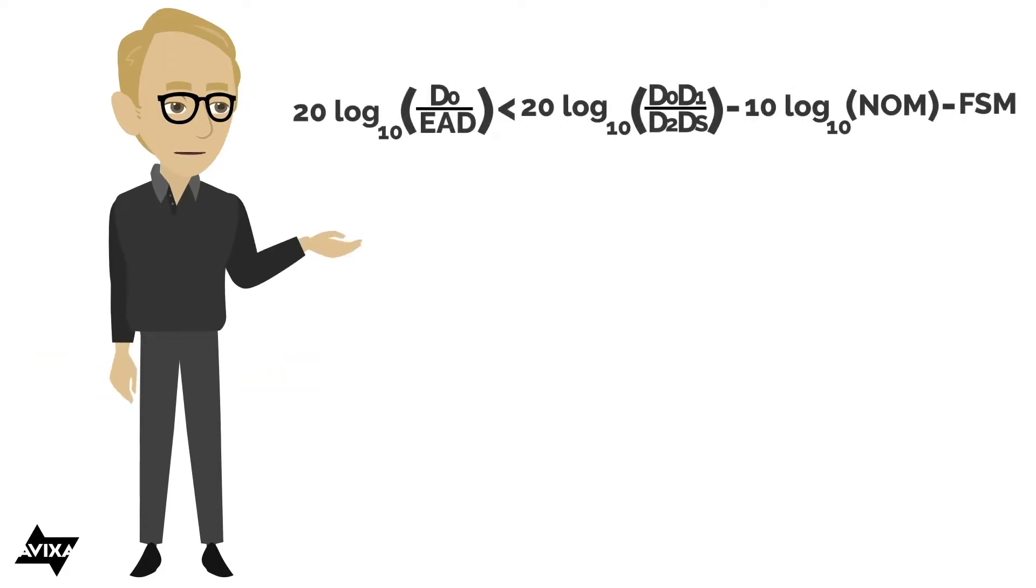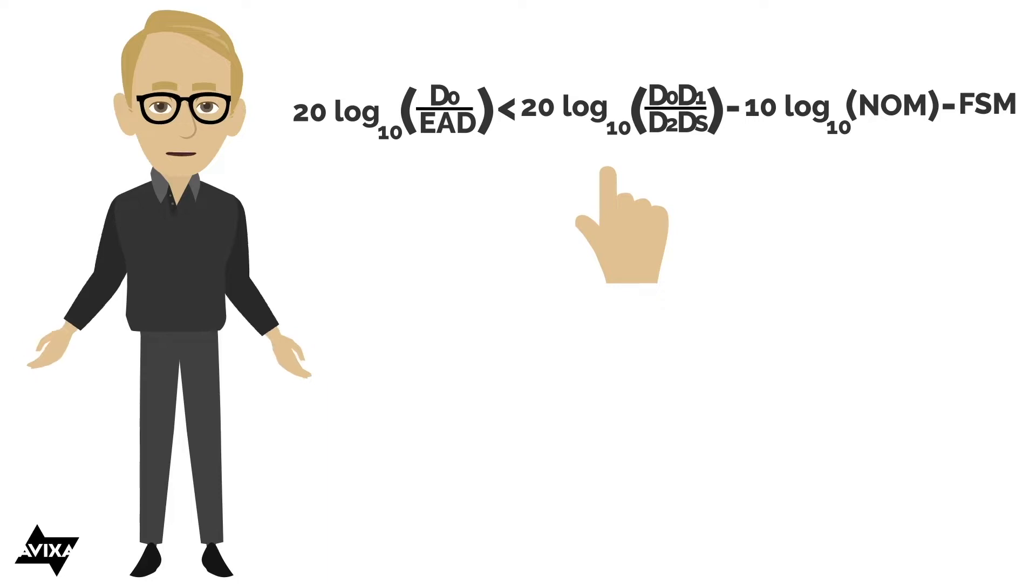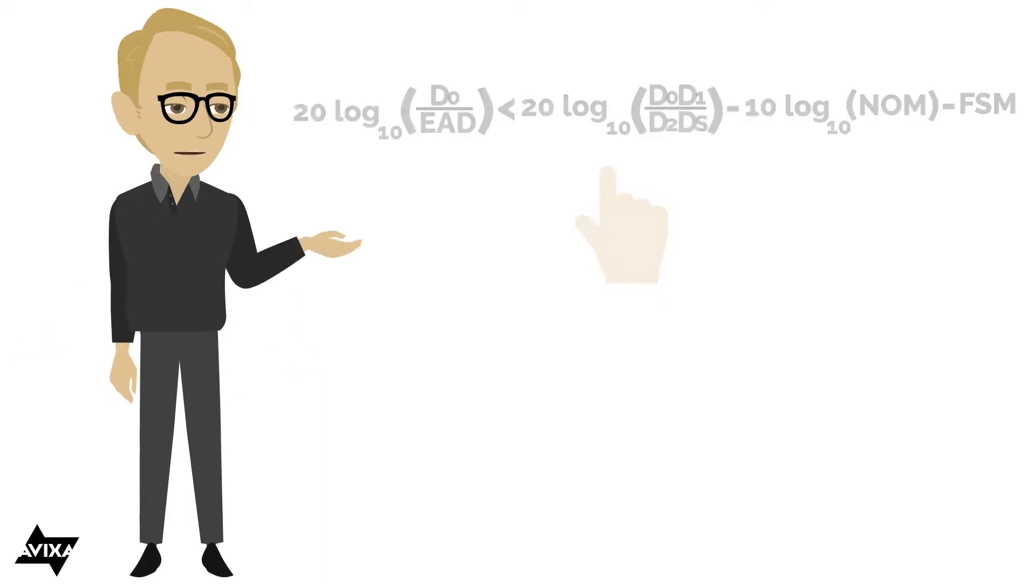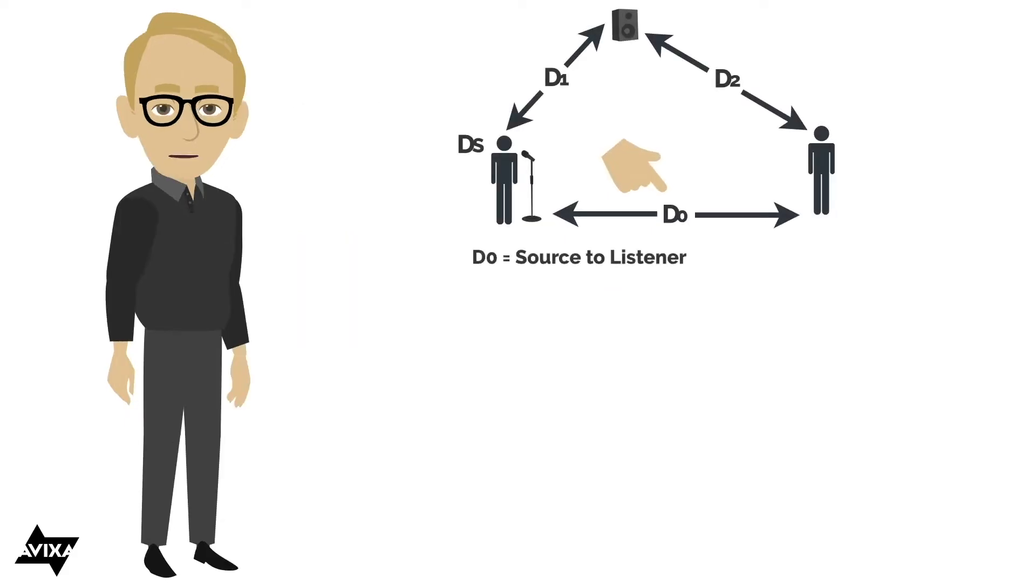Now, you can see this formula here out of some of the math sheets. And what you're going to see here on the left is the NAG formula, 20 times log of, and you see the little 10 there at the bottom. That just means a common logarithm, base 10. You get a common logarithm by just hitting the log button on your calculator. Here's an illustration of a sound system. Let's start with D0. D0 is going to be the distance from the source to the listener. D1 is going to be the distance from the microphone to the loudspeaker. D2 is going to be the distance from the loudspeaker to the listener served by that loudspeaker. And then DS is just simply the distance from the source to the microphone.